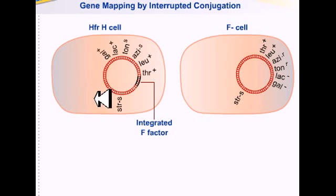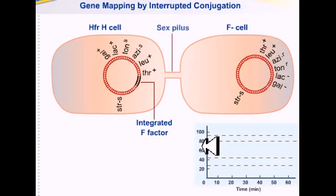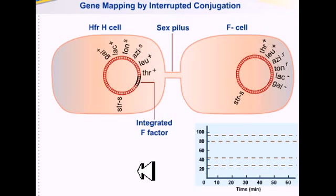How can sex be used to map chromosomes in bacteria? The HFR cell contains an integrated F-factor that enables formation of sex pili to transfer chromosomal material to the F- cell. Transfer of the HFR chromosome is linear and begins at the origin of the F-factor.